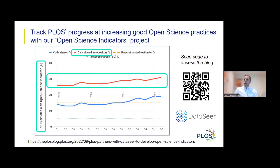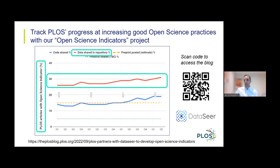As well as measuring the proportion of our articles that share data in a repository, we're also calculating and will publish the rates of code sharing in PLOS articles, the rates of preprint posting, and in 2023 we will also share rates of protocol sharing. We're doing this because we want to take an evidence-based approach to removing barriers to wider adoption of open science practices, and to do that we need to get better at measuring and understanding these practices.